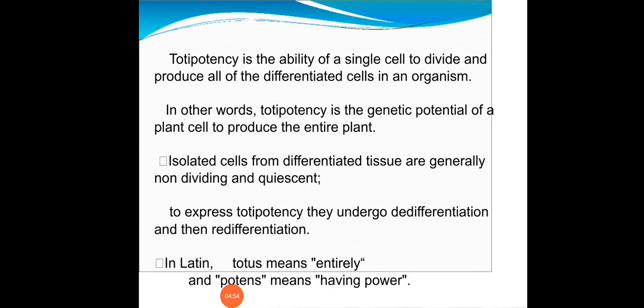Totipotency is the ability of a single cell to divide and produce all of the differentiated cells in an organism. From a single cell, division produces all differentiated cells. We can produce somatic embryogenesis through this process. Totipotency is also the genetic potential of a plant cell to produce an entire plant; totipotent isolated cells or differentiated tissues are generally non-dividing.